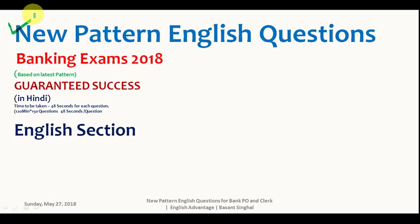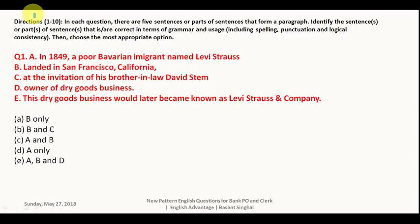Welcome to English Advantage online classes. In this video we will be discussing new pattern English questions for all banking exams. In this particular question, as you can see, five parts are given of one sentence: A, B, C, D, and E. One sentence is divided into five parts, and whichever parts are correct — that is your answer. If only A and B are correct, your answer will be A and B. If only C is correct, your answer is only C. You have to pick out the correct portions from A till E.